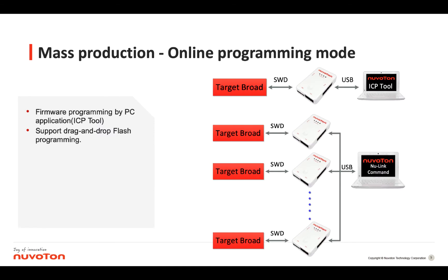During the mass production stage, there are two modes for programming the target chip: one is online programming, and the other is offline programming.